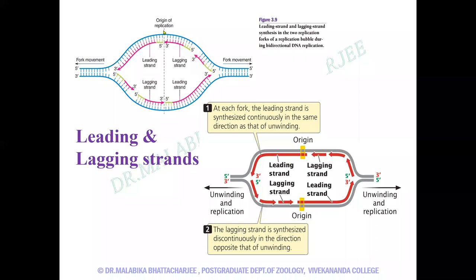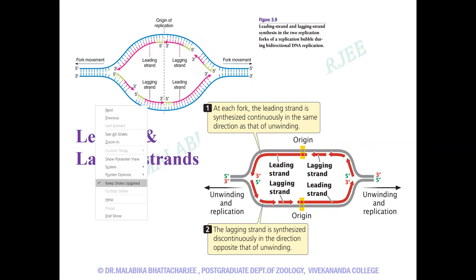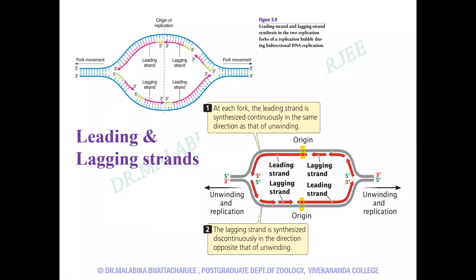Looking at this particular picture, start from the dotted line. We have a replication fork on this strand and a replication fork on this strand. The direction of the replication fork on one strand is this side, and the direction on the other strand is this side. The blue is the mother strand and the pink one is the daughter strand.